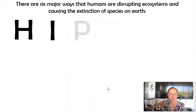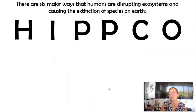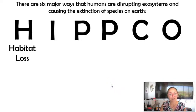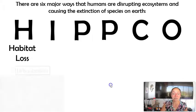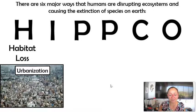We're going to focus on the College Board standards through the lens of HIPCO, which are the six major leading causes of extinction of species on Earth. The first one is habitat loss. College Board mentions we should teach about urbanization, logging, and monoculture, so let's focus on those.